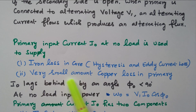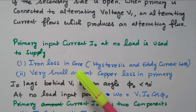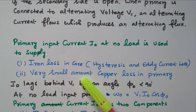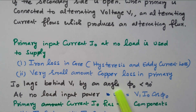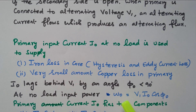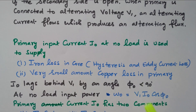Another part is a very small amount of copper loss in the primary. One component is for iron loss; another is used for magnetizing the coil. This I0 lags behind the voltage V1 by an angle phi0, which is less than 90 degrees — that is due to the inductive circuit where current lags the applied voltage.